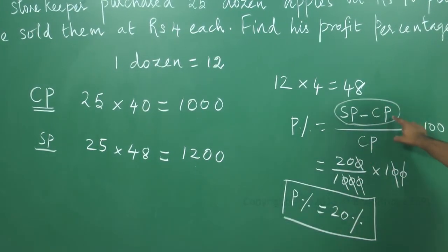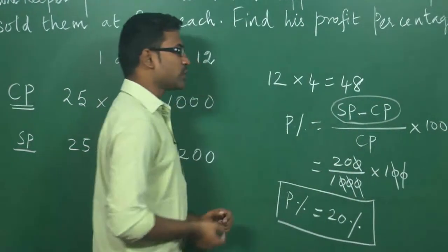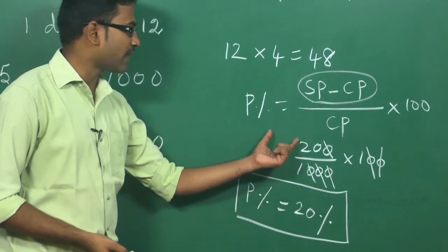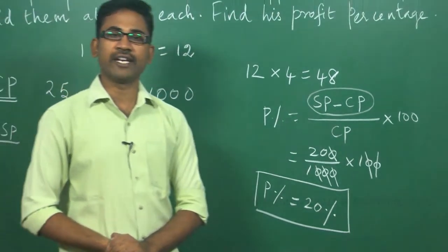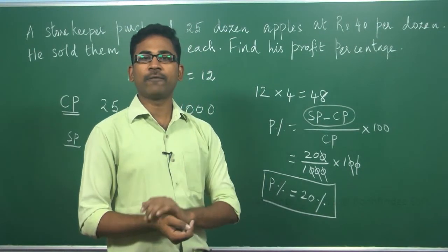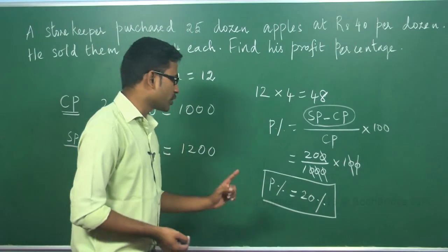Profit percentage can be calculated by SP minus CP divided by CP into 100. Here, this is profit. That is, SP minus CP. That is, 1200 minus 1000, which equals 200. Cost price is 1000 into 100. After simplifying this, we are getting profit percentage is equal to 20 percentage. By selling every single apple for Rs. 4 each, the shopkeeper is gaining a profit percentage of 20.